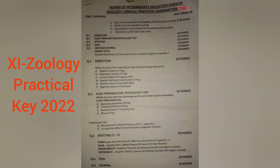Assalamu alaikum and welcome back students. I am sharing the pattern of the first year zoology annual practical examination 2022. On your screens you can see the key given by the Board of Intermediate Education Karachi. According to this key, your practical exam will be of eight marks. One mark is equal to 10 points, so eight marks will be of 80 points — all marks are awarded in points.